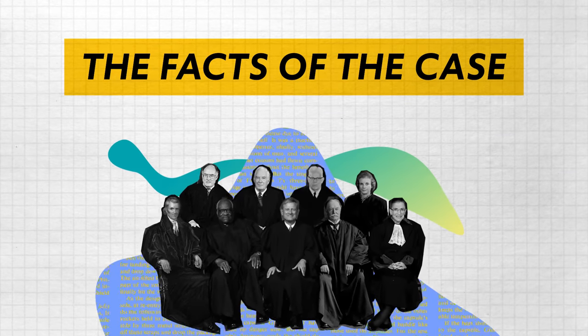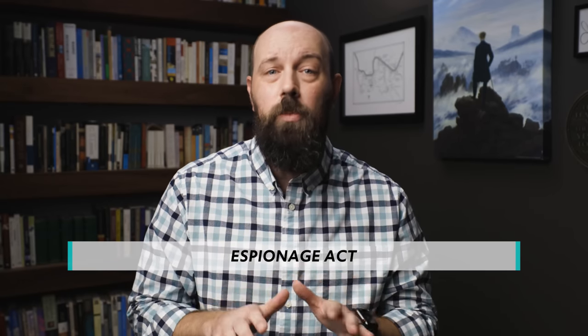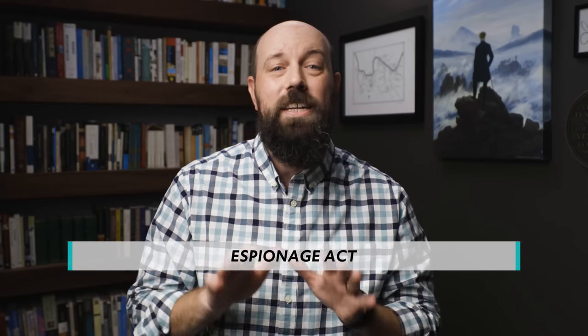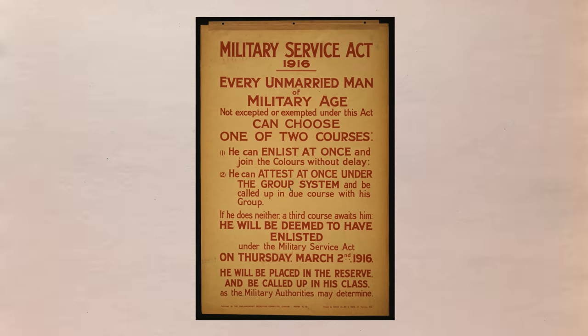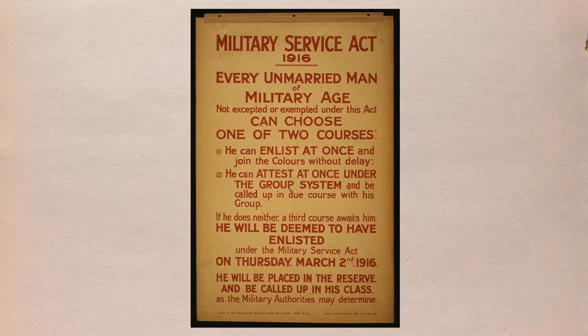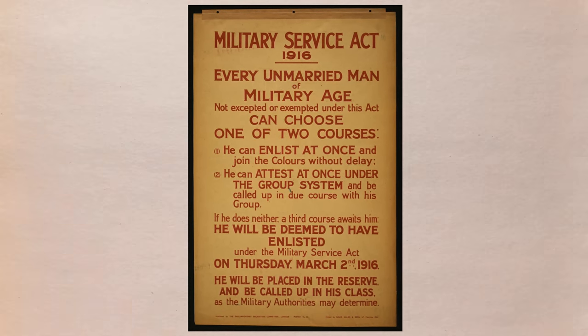In 1917 Congress passed a law called the Espionage Act, and its purpose in part was to outlaw any hindrances to military recruitment. This was right smack in the middle of America's involvement in World War I, and the draft had just started that year. So a guy by the name of Charles Schenck, who was a member of the Socialist Party in Philadelphia, was not a big fan of the military draft. So he wrote up a pamphlet which encouraged young American men to resist the draft.